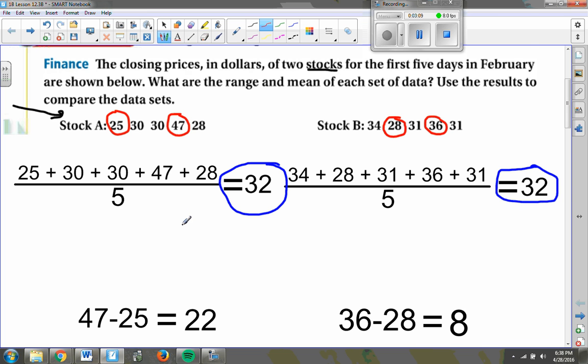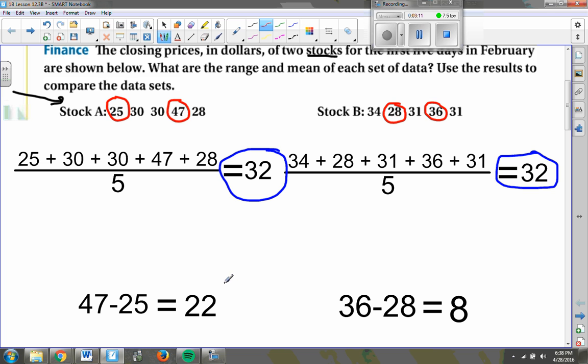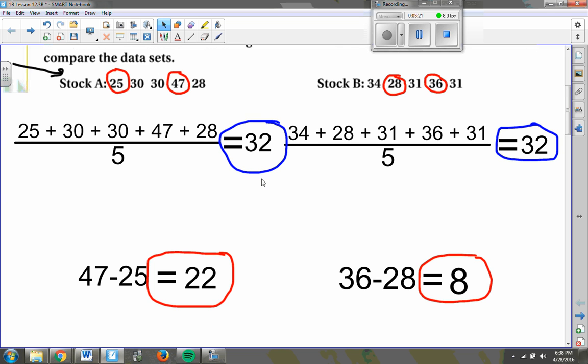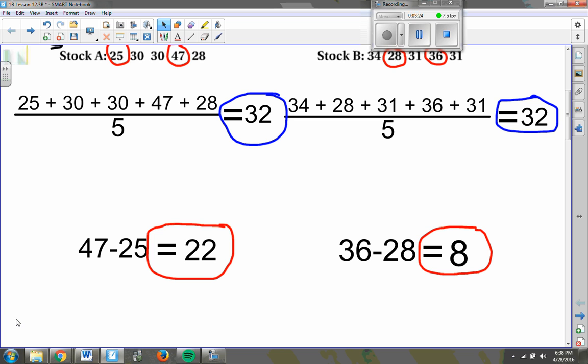So obviously, although these two stocks had the same average value, they certainly had very different ranges, or stock A is much more spread out than stock B. So if I'm going to compare these two stocks, that's what I'm going to say.